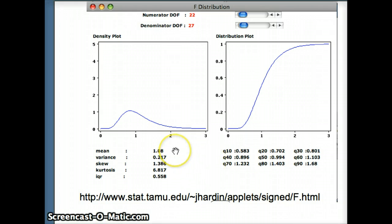And you can see the applet gives us the mean and variance of that F, as well as the quartiles, the percentiles, 10th percentile, 20th percentile, et cetera.